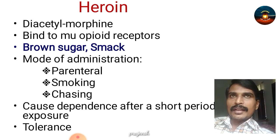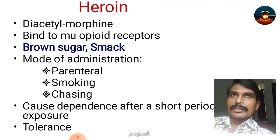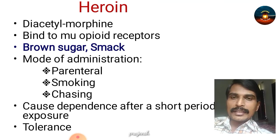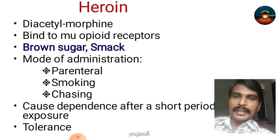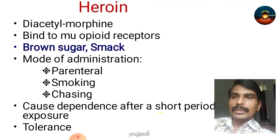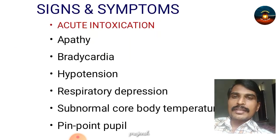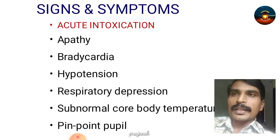What is tolerance? Higher amounts are needed to get the initial effects caused by the drug. The person will have to consume a large amount of drug in subsequent intakes to achieve the effect obtained in the initial intakes. This is called tolerance, and heroin causes a large extent of tolerance.